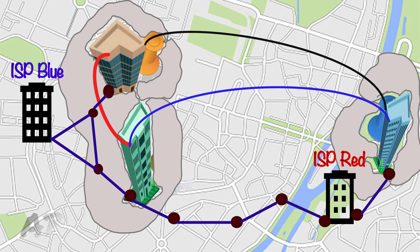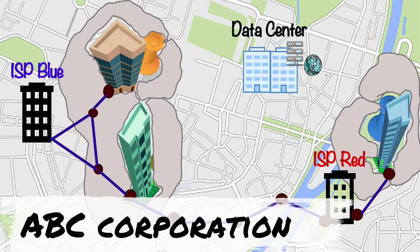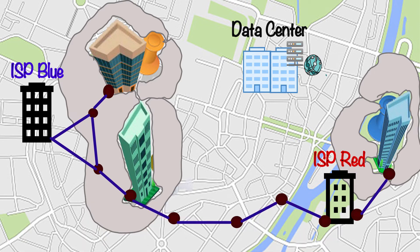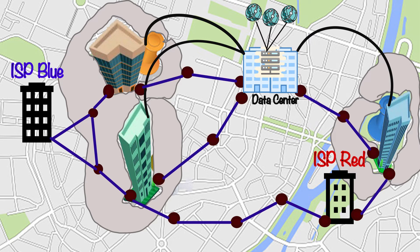Another example: ABC Corporation has hosted their web services in a data center located in the same city or a nearby different city. The company wants all branch offices to connect to this data center securely and privately over the fiber network. In that scenario, the ISP can provide connectivity from all branch offices toward the data center, giving all branches private connectivity with the data center as well.